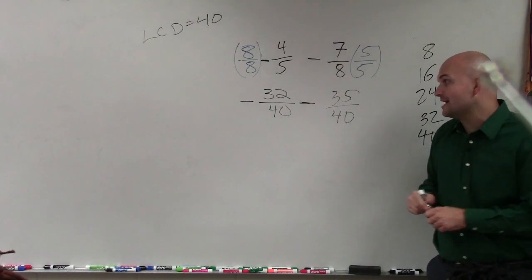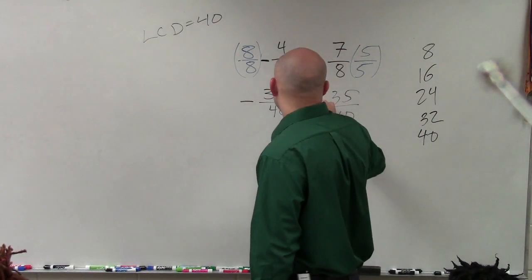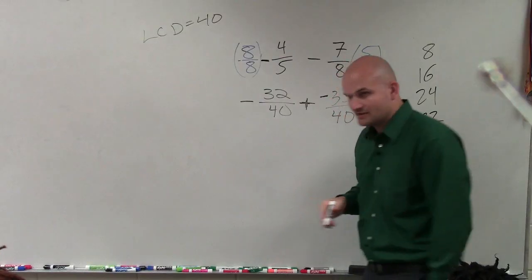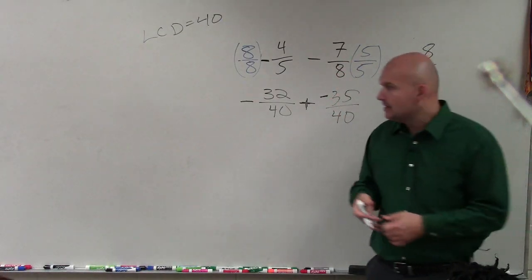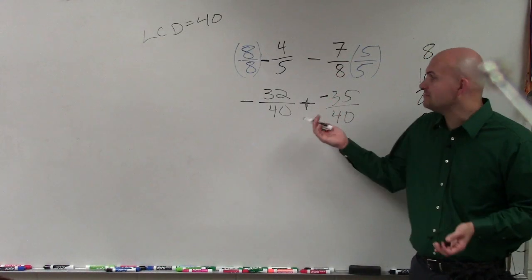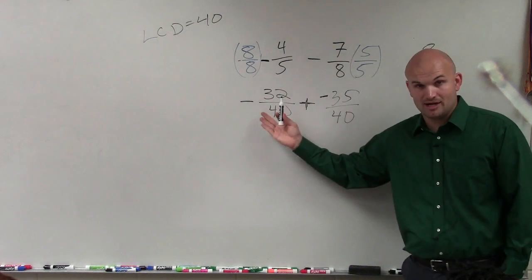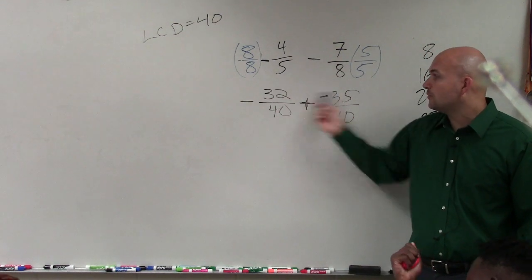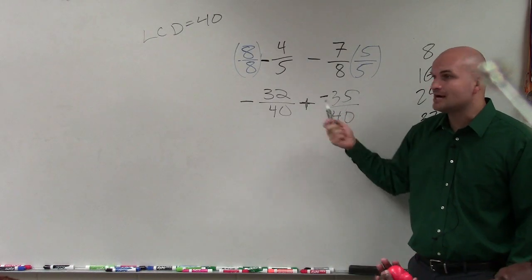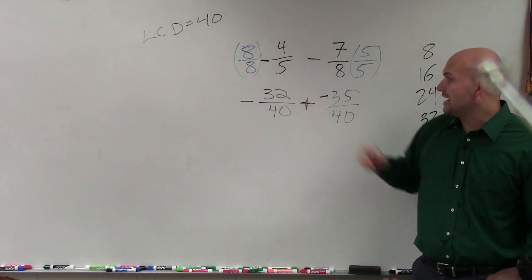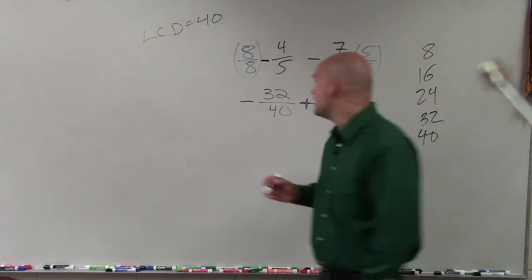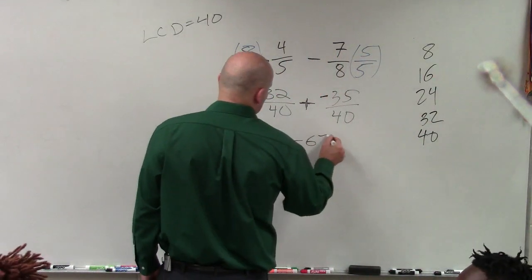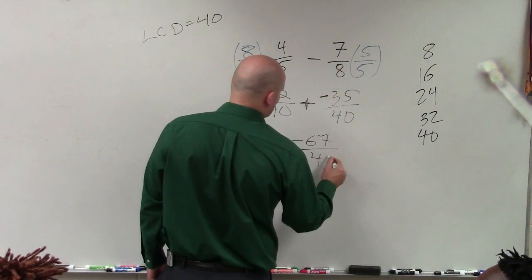So now, as I subtract these, again, what you guys can think of this is adding a negative. Change it to an addition problem. And that, a lot of times, makes it helpful. You owe somebody money plus you owe somebody else money, right? So what you're simply doing is you're going to add these up. And it's still going to be negative. So negative 32 plus negative 35 is going to be a negative 67 over 40.